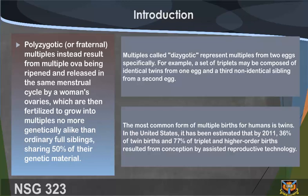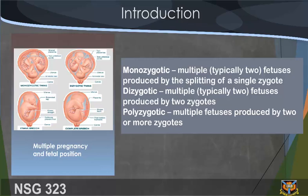Fraternal multiples are no more genetically alike than ordinary siblings, sharing 50 percent of their genetic material. Multiples called dizygotic represent multiples from two eggs. For example, a set of triplets may be composed of identical twins from one egg and a third non-identical sibling from a second egg. In the United States, by 2011, 36 percent of twin births and 77 percent of triplets and higher-order births resulted from assisted reproductive technology.